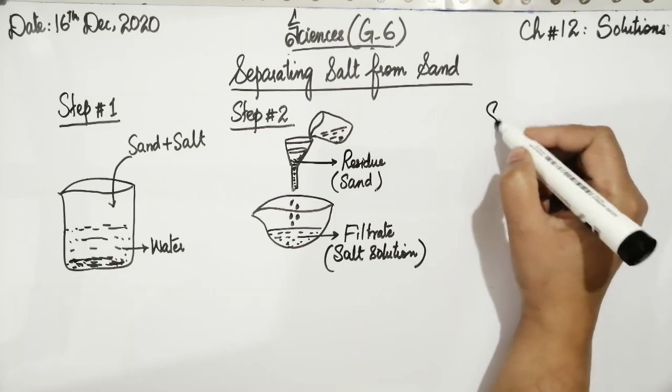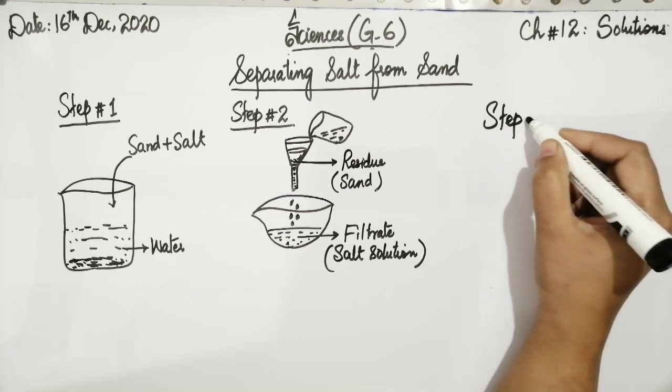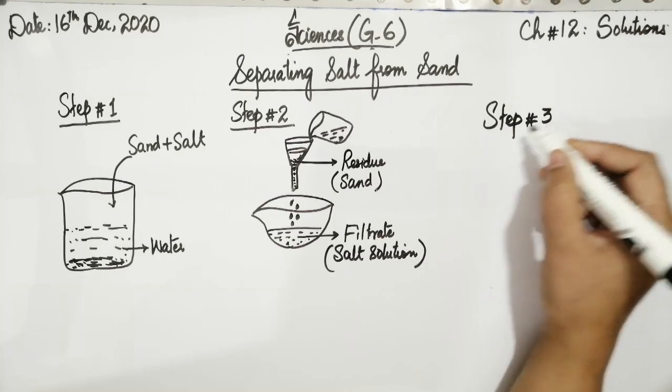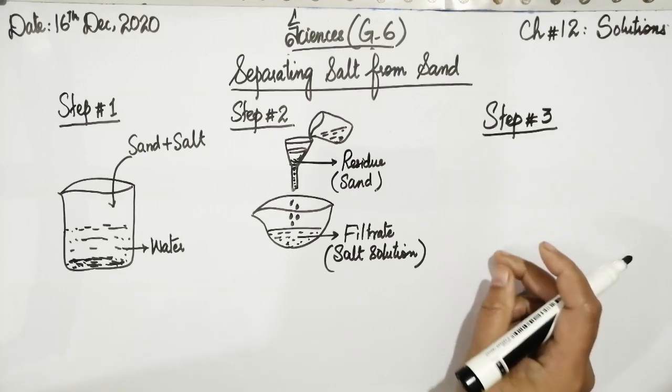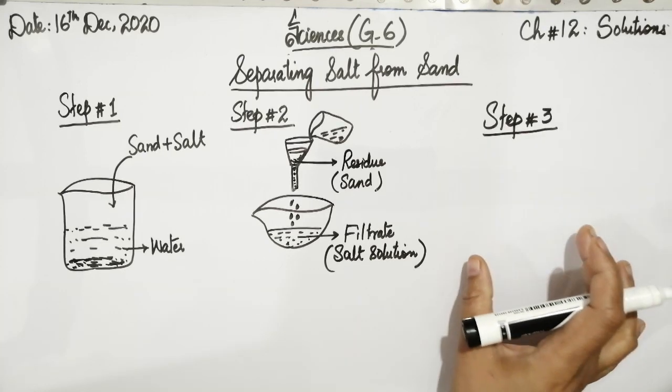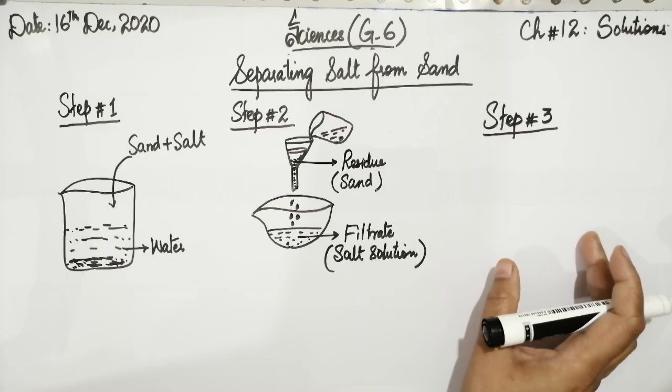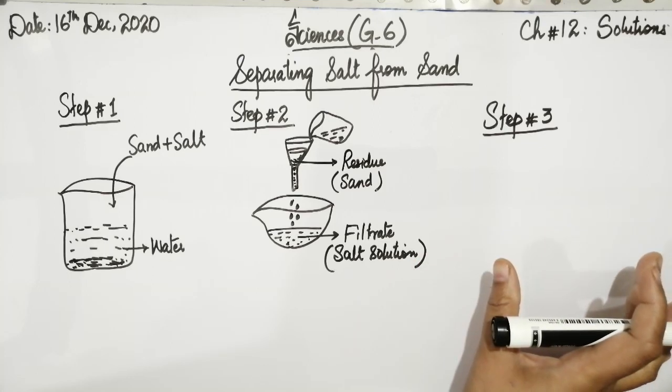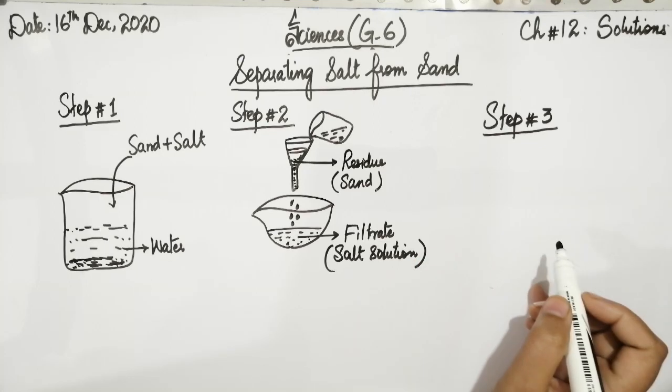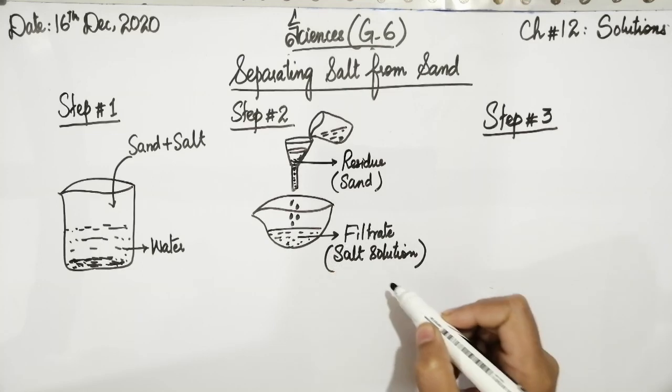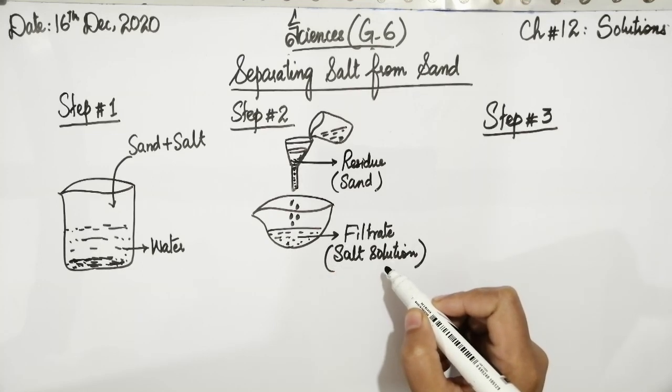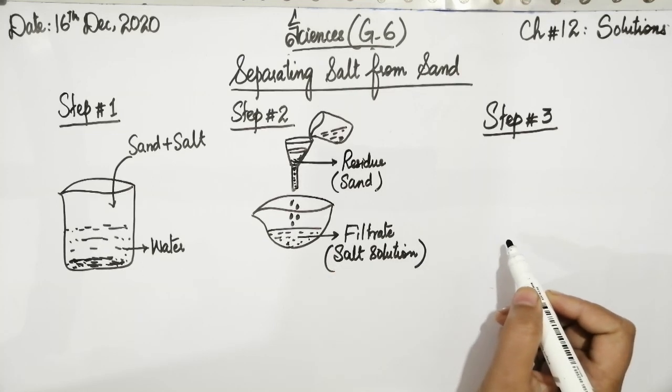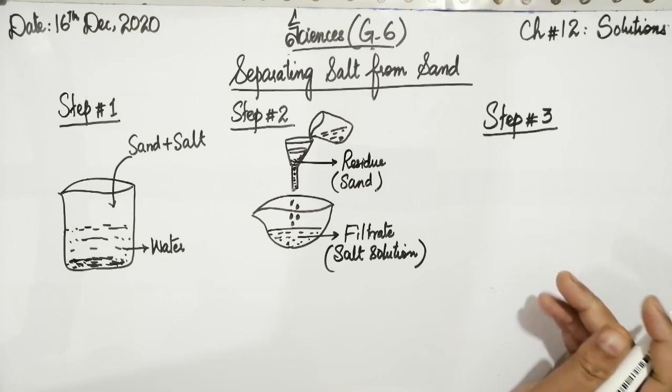Now, step number three. This is the last step of this technique. In step number three, we will provide heating to the evaporating dish or the content of the evaporating dish. We heat the clear salt solution here, that is the filtrate. The water will evaporate and dry salt crystals are left.